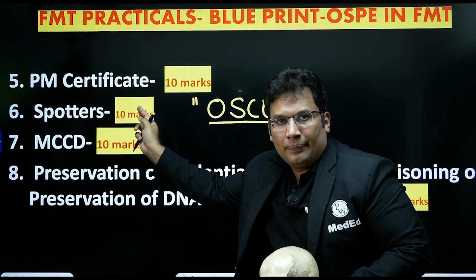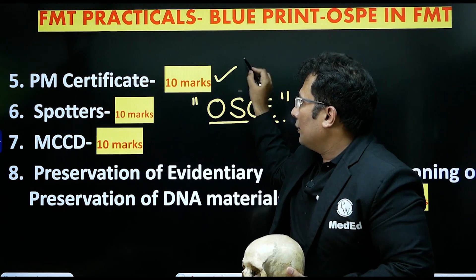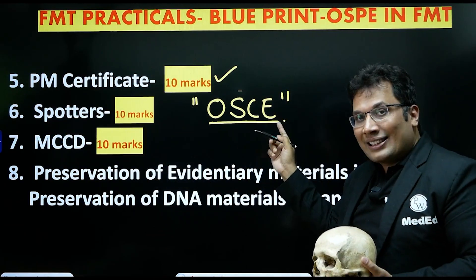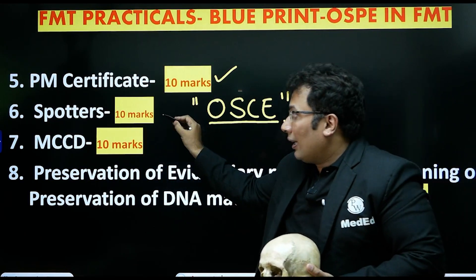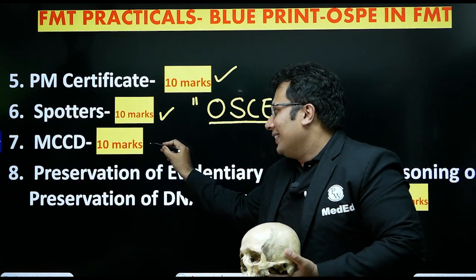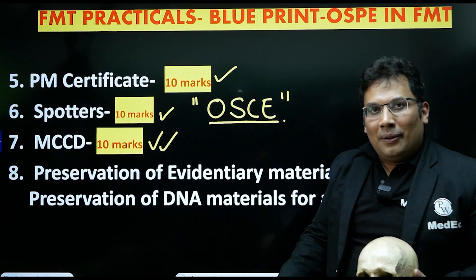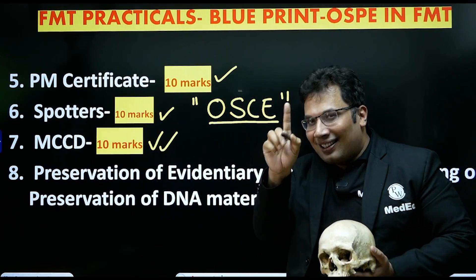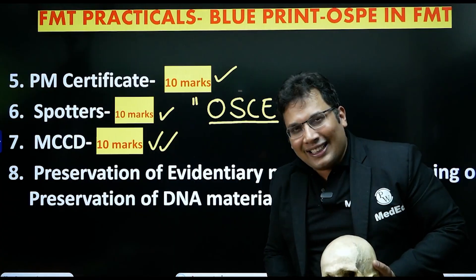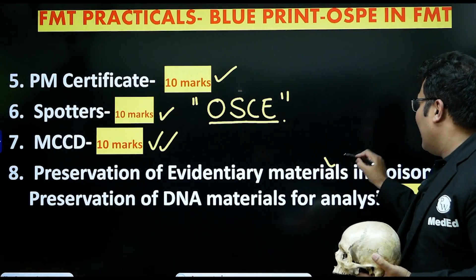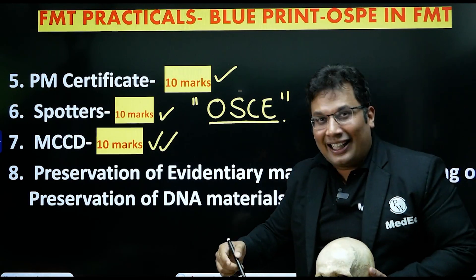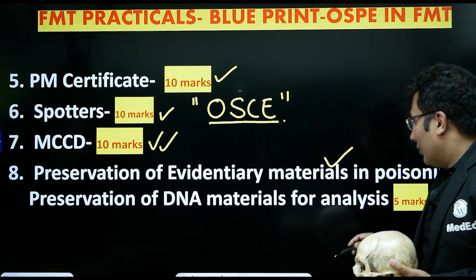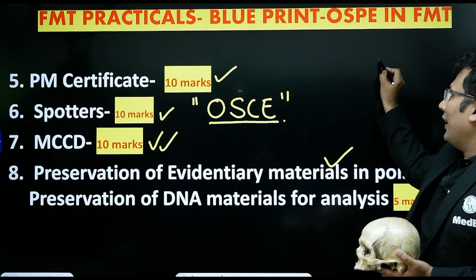The fifth exercise is the PM (postmortem) certificate, around 10 marks. The sixth is spotters — OSCE in forensic medicine — around 10 marks. The seventh is MCCD, the medical certificate of cause of death, around 10 marks. The eighth is one short exercise on preservation of evidentiary material in cases of poisoning, such as OP poisoning or DNA material preservation, around 5 marks — making a total of around 80 marks for practical.